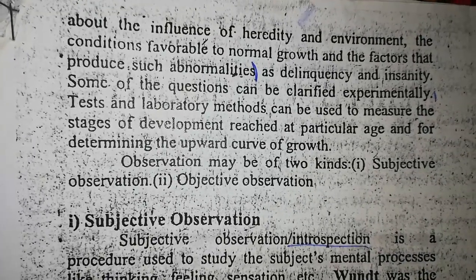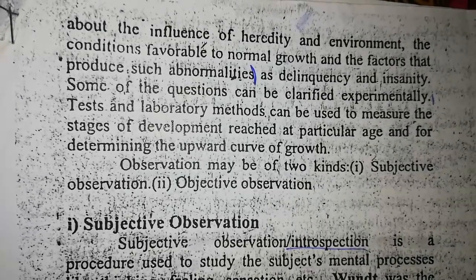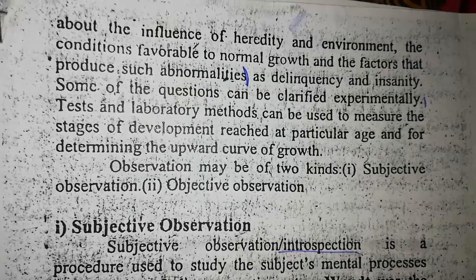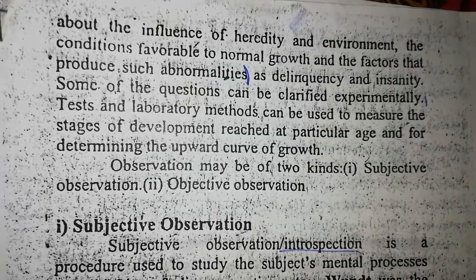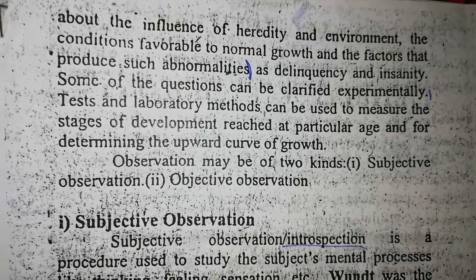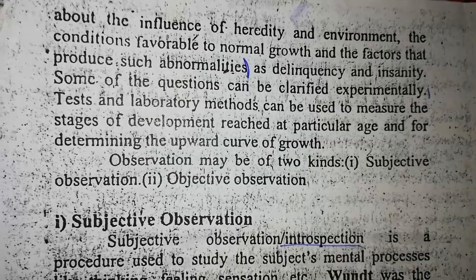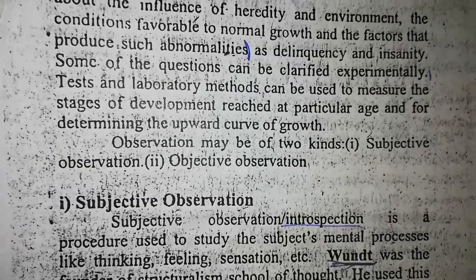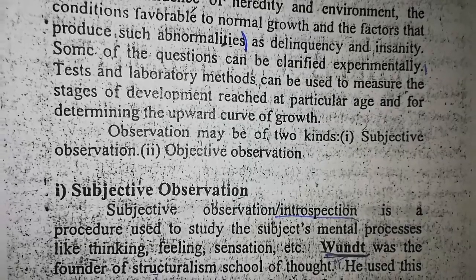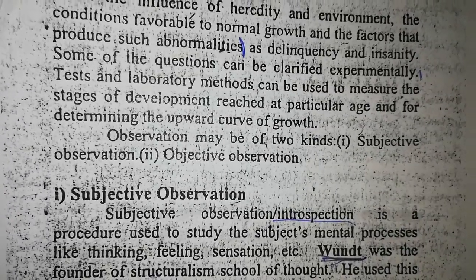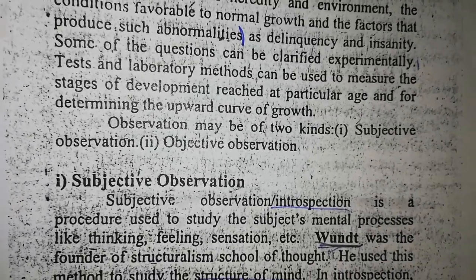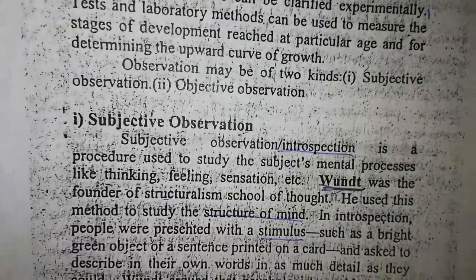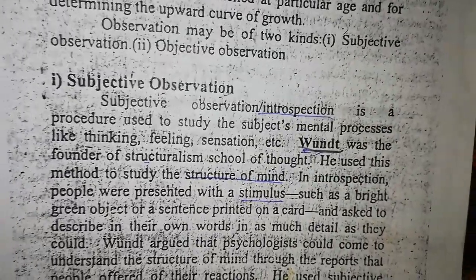Some of these questions can be clarified experimentally. Tests and laboratory methods can be used to measure the stages of development reached at a particular age and for determining the upward curve of growth. Observation may be of two types: subjective observation and objective observation.